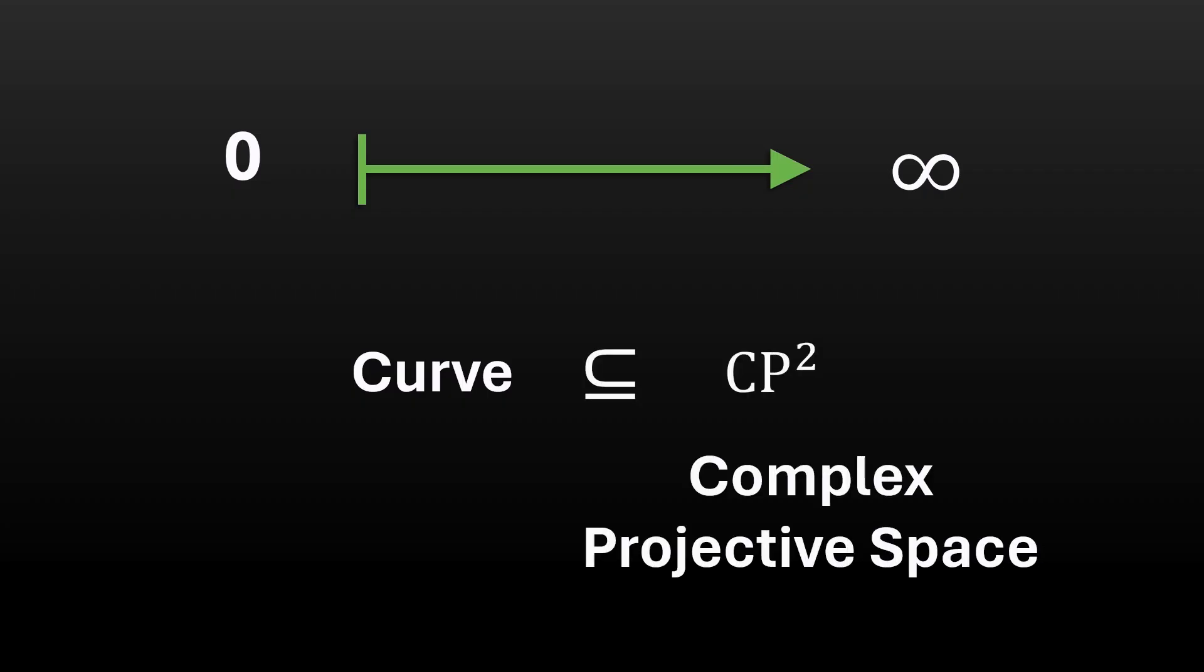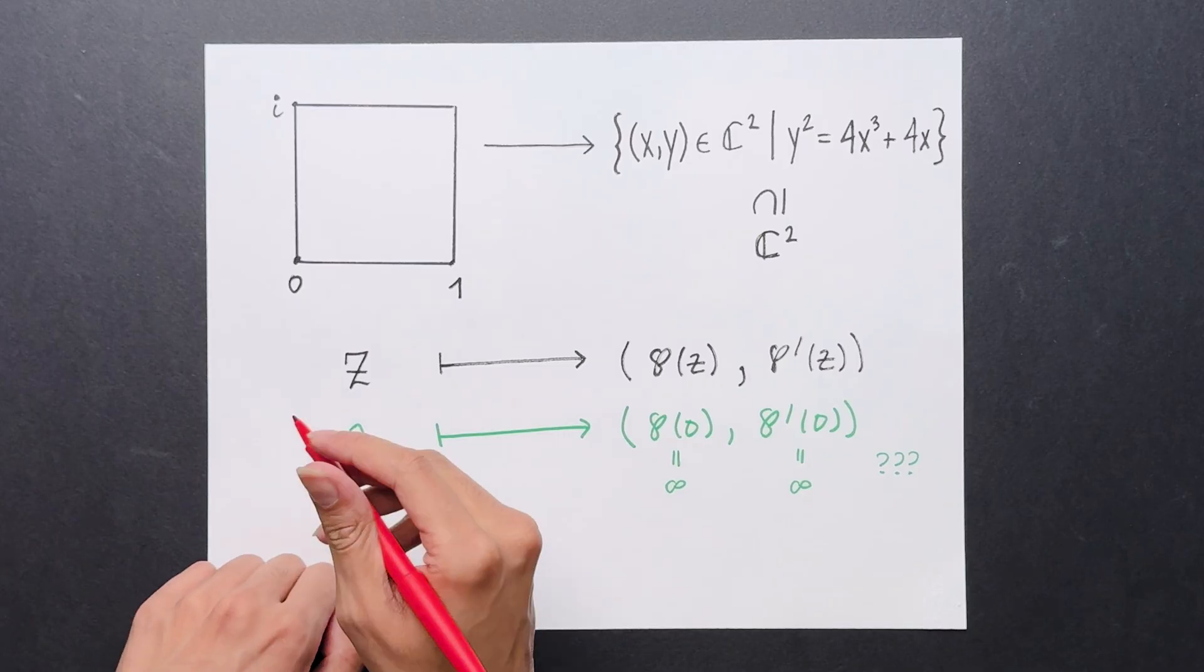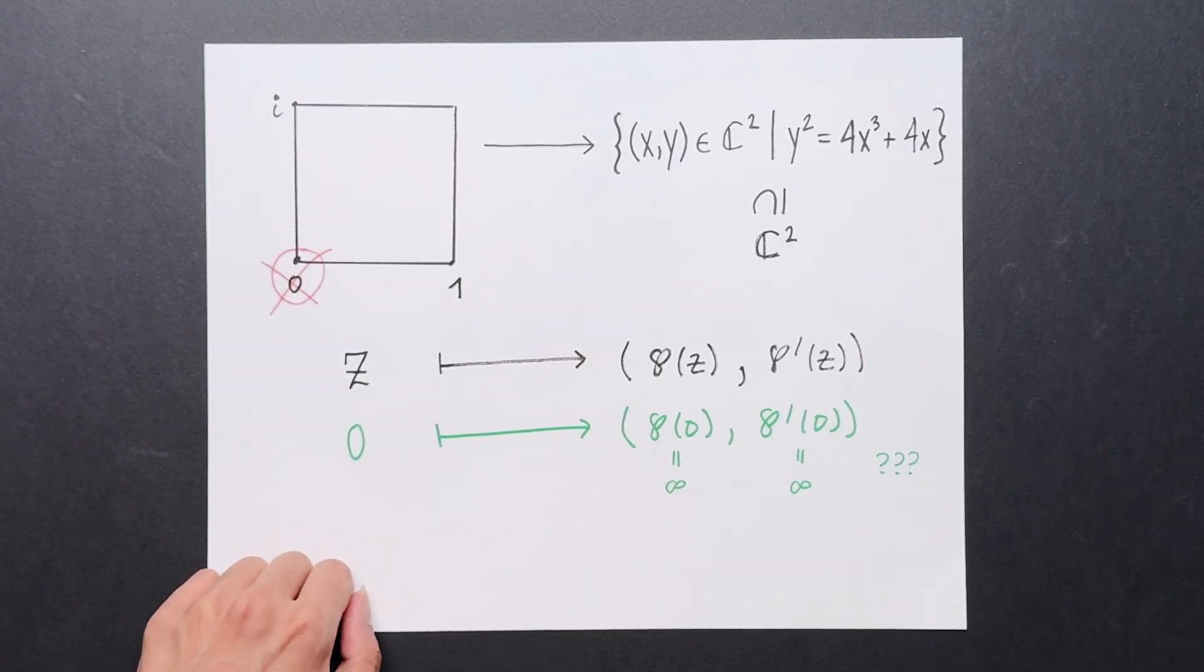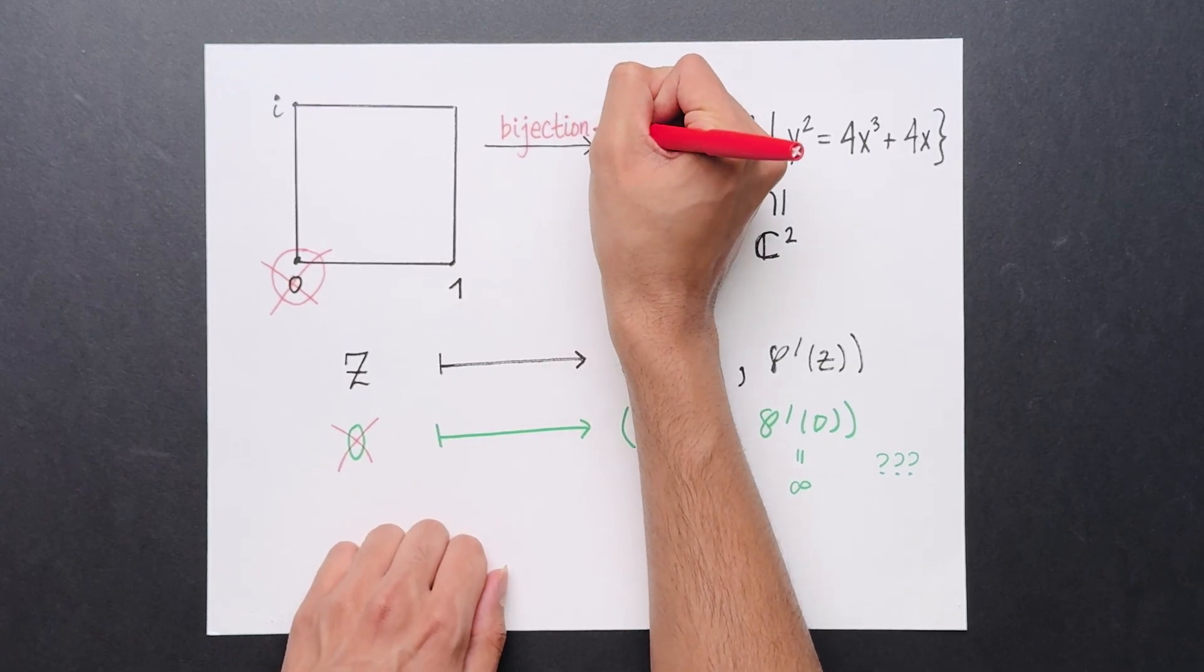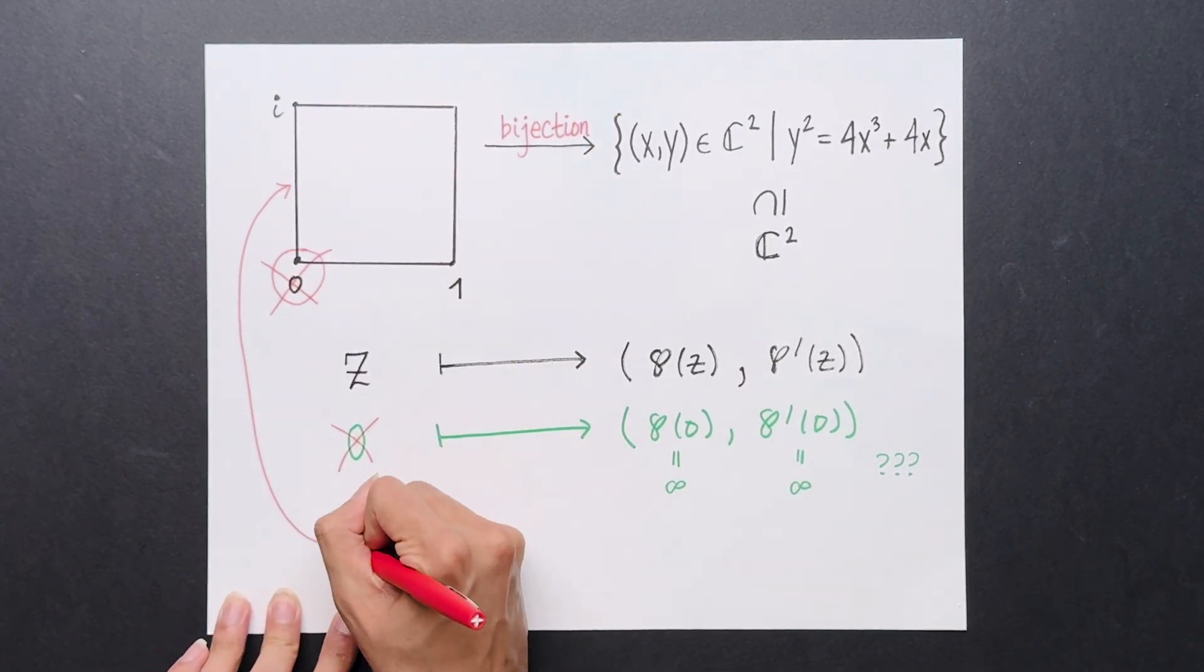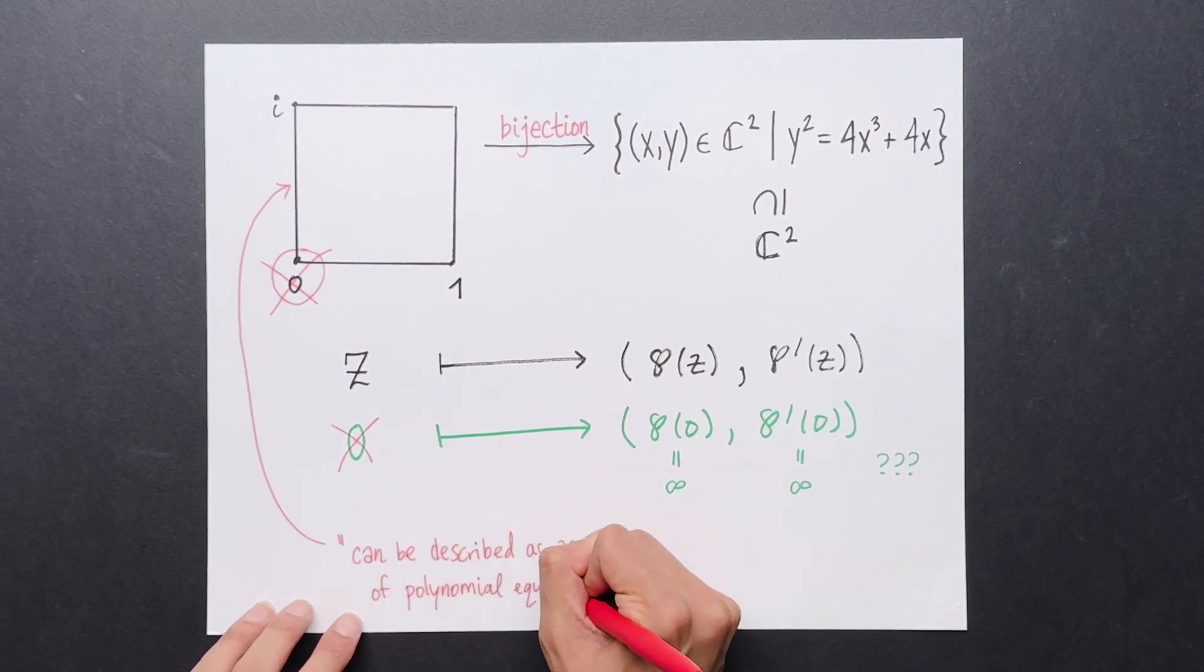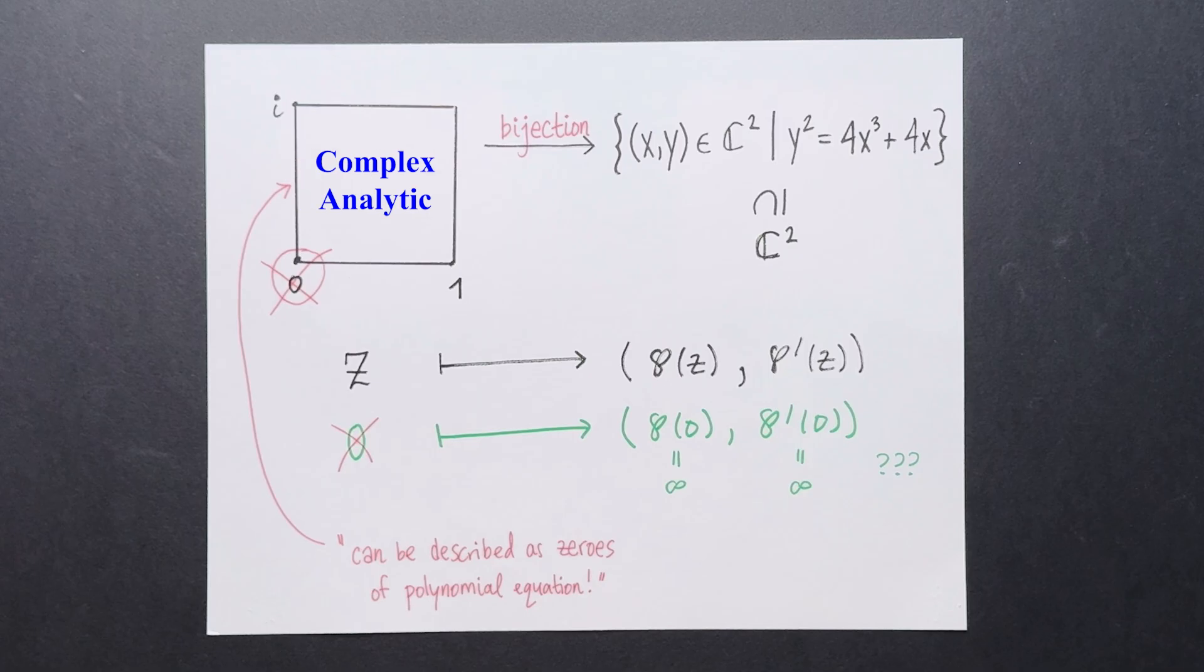To do this, mathematicians don't consider this curve as living in C2, but in a slightly larger space called CP2, the complex projective plane. Defining this rigorously would require a whole another video, so to make sure we don't obscure the main point, we'll gloss over this technicality. What is true though, is that if you ignore this point 0, there is a bijection between this square, not including 0, and the solution set in C2 of this curve. Said more provocatively, this square can be described as the zero set of a polynomial equation. This is really weird. This square is a purely complex analytic object, and yet we've isomorphically mapped it to something which is algebraic.